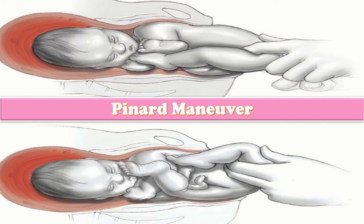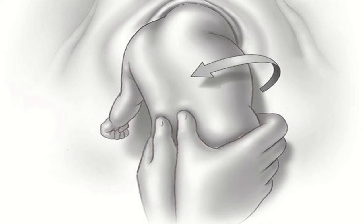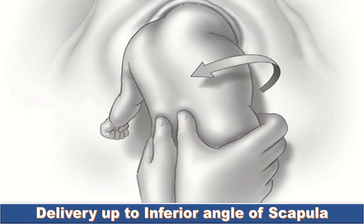The body will descend further with uterine contractions until the umbilicus. I will wrap the baby in a warm moist towel and check the cord — if it is tight, I will loosen it. Keeping the back anterior, the body will be delivered with uterine contractions until the inferior angle of the scapula becomes visible.